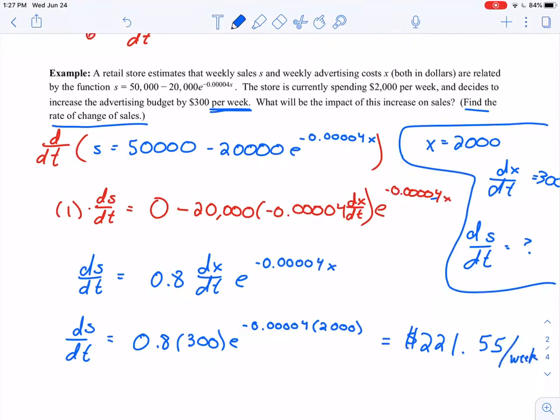Does the answer make sense? Well, if we increase our advertising budget, right, that was what DXDT represents. If I spend more money on advertising, I've got a positive derivative there. Does it make sense that I would have a positive derivative here? What that's saying is that the sales are increasing. So if I spend more money on advertising, does it make sense that I would make more money back on sales? Yeah, I think that's safe to say. So yeah, and you can kind of actually look at this and say, well, is it worth it to increase our advertising budget by $300 per week if we're only going to make an extra $221 in sales per week? And that's a decision that you would have to make in the quote-unquote real world.